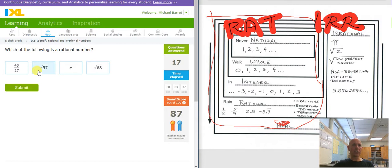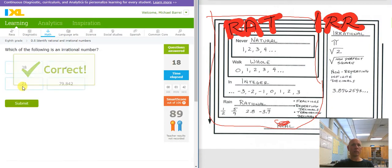Which of the following is rational? Rational, that's irrational, irrational, irrational. Which of the following is irrational? Pi is irrational. Everything else is rational.